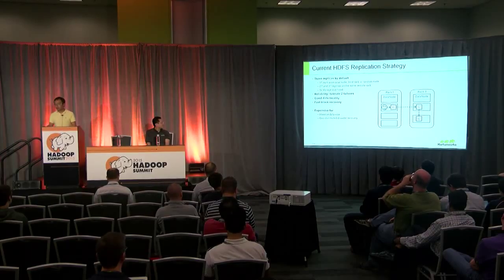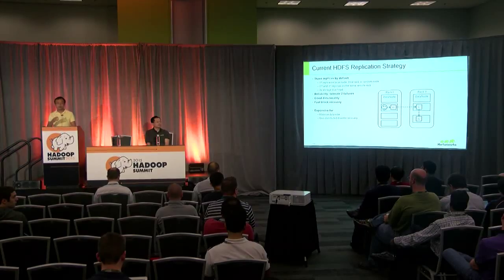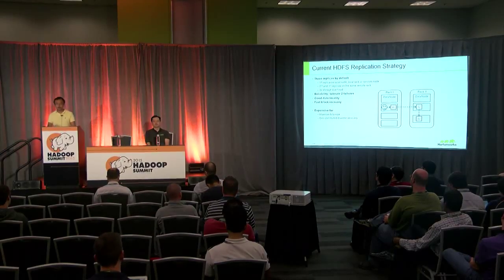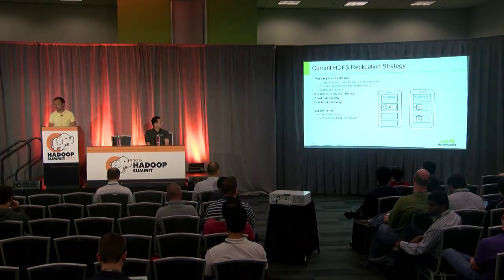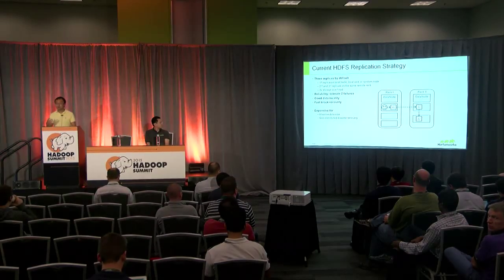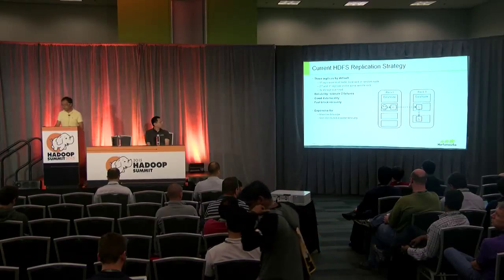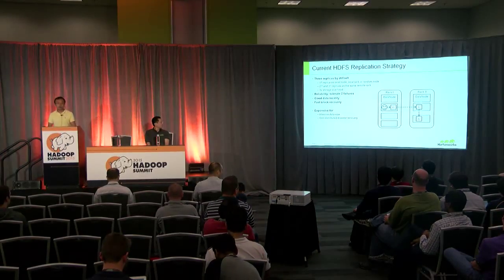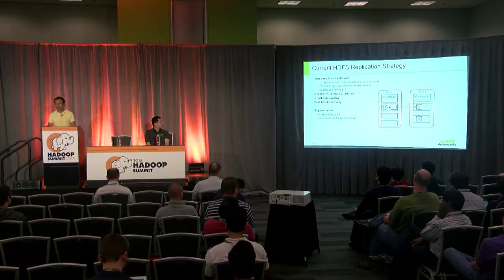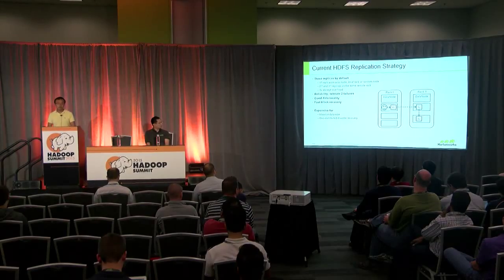HDFS maintains by default three replicas for a block. We place the first replica on the local node; if the client cannot write locally, we try the local rack, or finally a random node. We set up a writing pipeline where the second and third replicas go on the same remote rack so we can tolerate rack failures. This strategy works well in most cases, giving high reliability and good data locality so readers have a good chance to read from a local node.